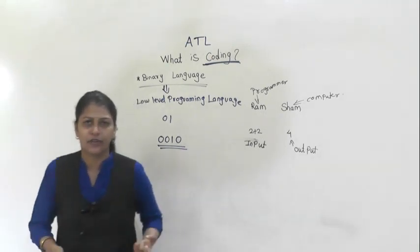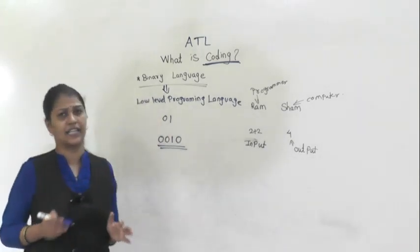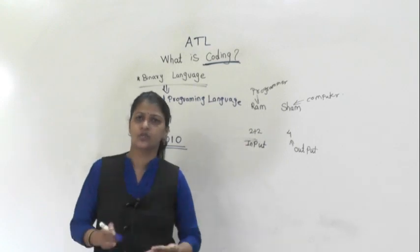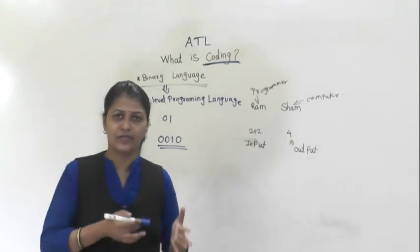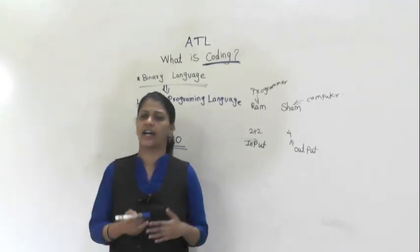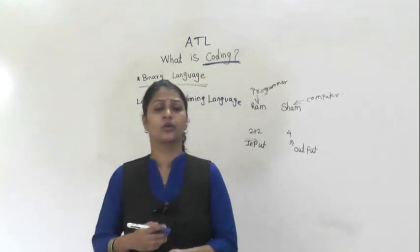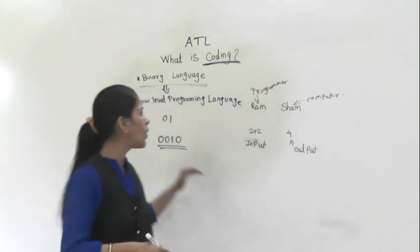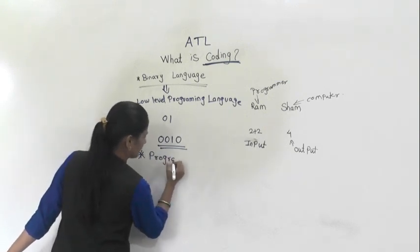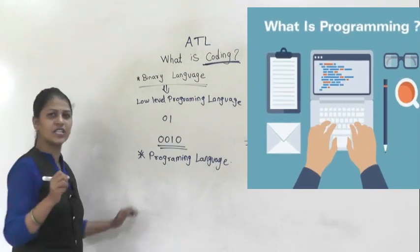But if we want to deal with big numbers, it becomes impossible to use binary language alone. For example, the addition of 60 plus 40 would require many 0s and 1s, and it may take a very long time to complete the task. So to overcome this, we use programming languages.